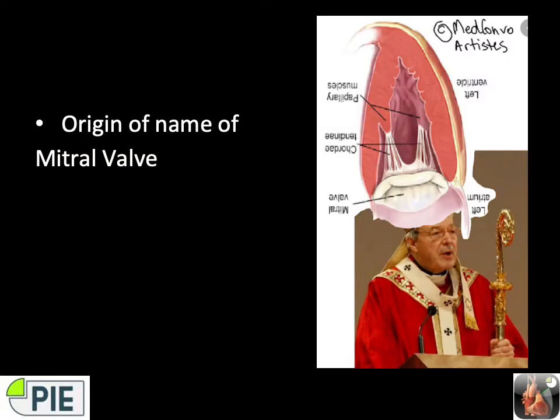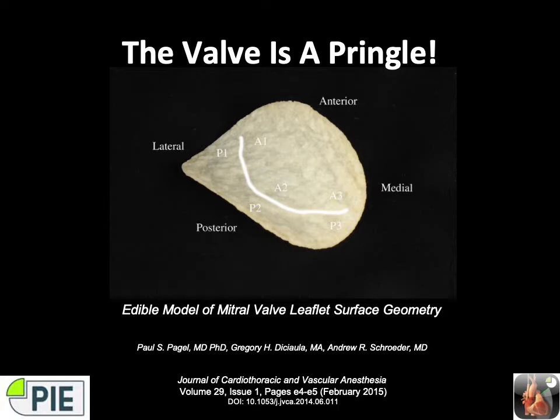Interesting fact: the name of the mitral valve comes from its shape, which is the Bishop's Mitre — again an Irish reference. The mitral valve is saddle-shaped like a Pringle. The anterior-posterior diameter is the front and back of the saddle, the higher parts of the curve.